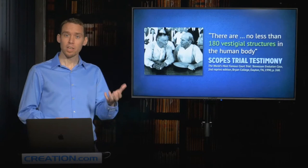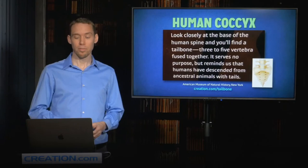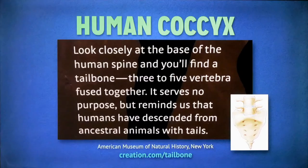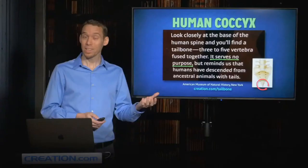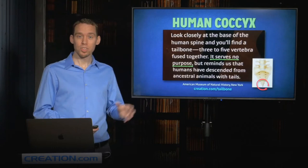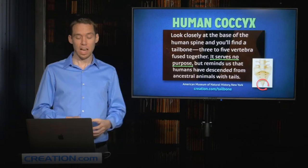For example, in 2017, I visited New York City, where they have the American Museum of Natural History. I was amazed to come across this sign amidst all their supposed evidence for evolution. The sign talks about the human coccyx, or our tailbone. This is a little triangular piece of bone right down there at the base of our backbone. It's a part of our pelvis. Look at what the sign says about the tailbone. It serves no purpose, but reminds us that humans have descended from ancestral animals with tails. Really, is that all that our tailbone does? I'm sort of astonished that they would print something like this with all the scientific experts they have on staff at the museum.